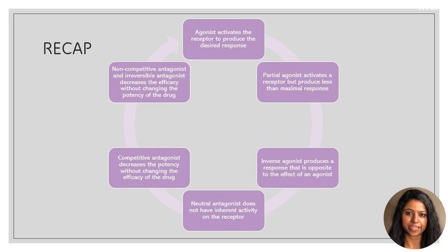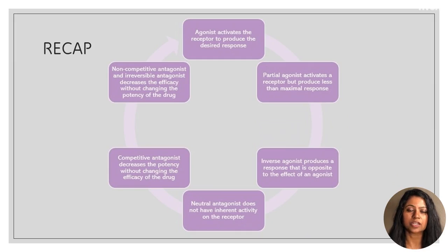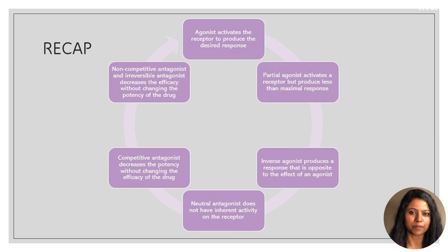To recap: an agonist binds at a receptor to produce the desired response. A partial agonist also activates the receptor but produces less than the maximal response. An inverse agonist binds to the receptor and produces an effect that is opposite to the effect of a full agonist.